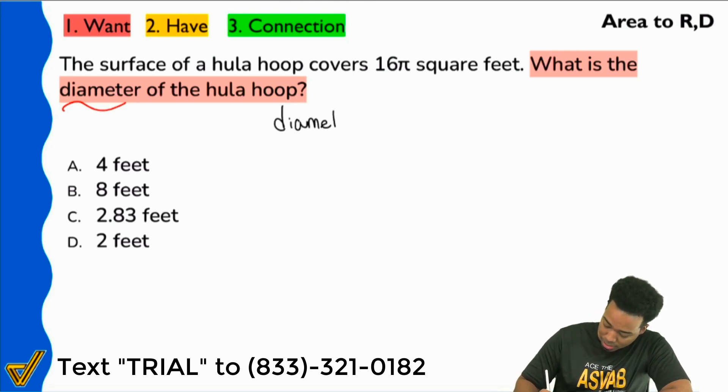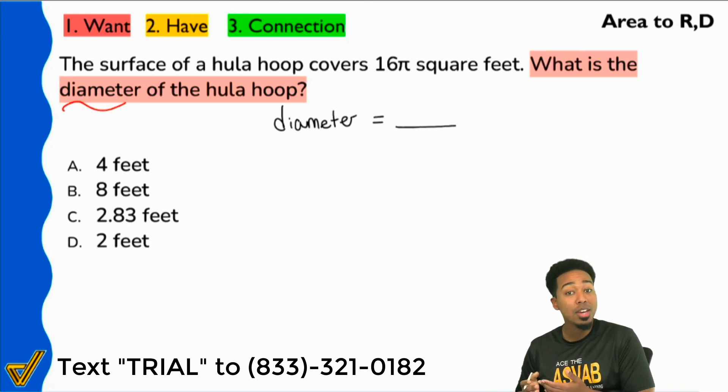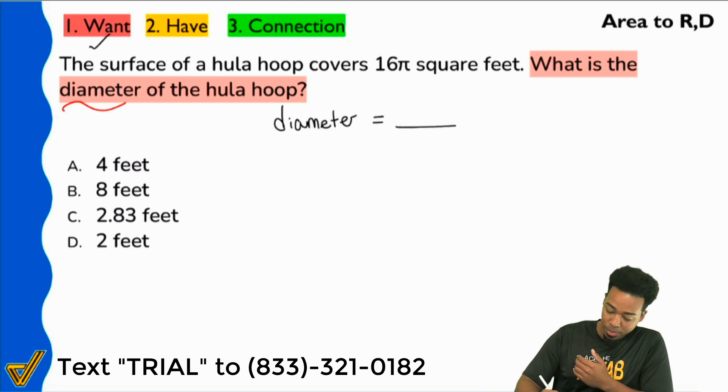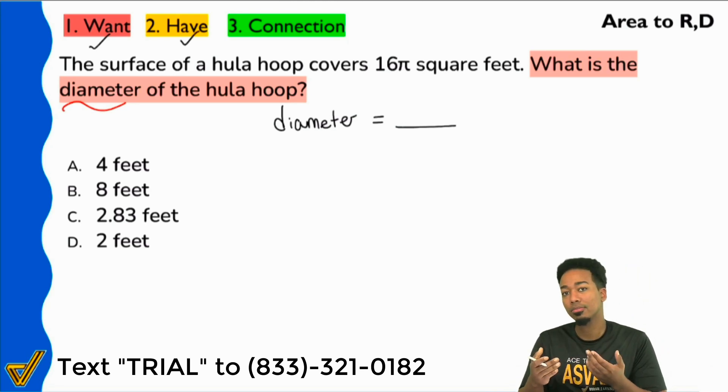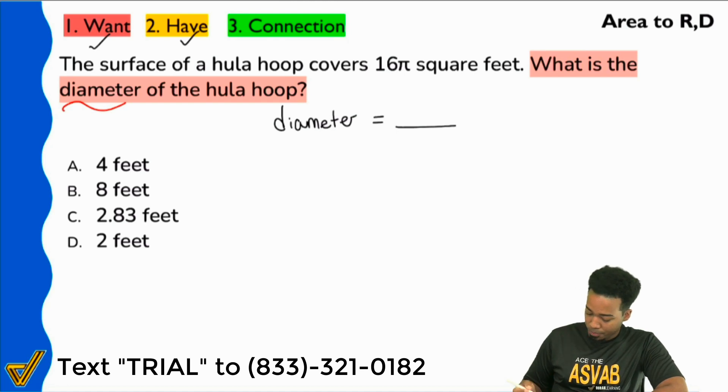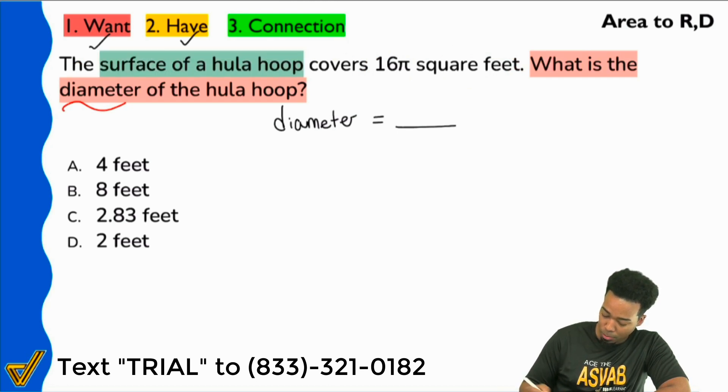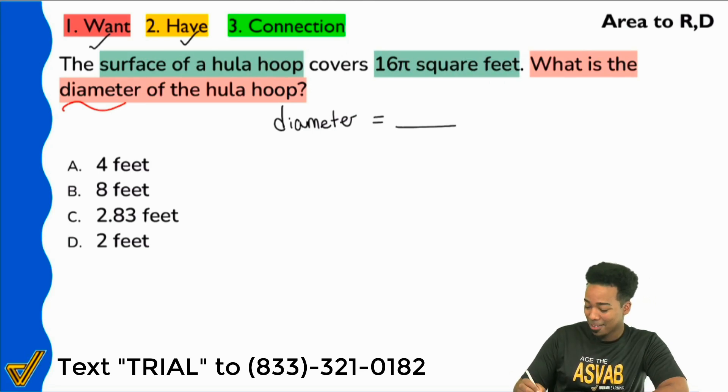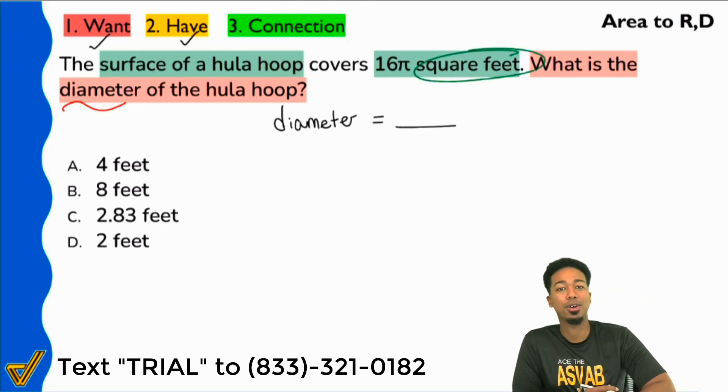So we'll write that down. Diameter equals, I don't know, but we're gonna go ahead and collect some information now because we know what we want. But now we're gonna collect some information to see where we're going with this. So here we go. We see that it says the surface of a hula hoop covers 16π square feet. So right here it says again, surface of a hula hoop covers 16π square feet. And I'm really gonna emphasize right there square feet.